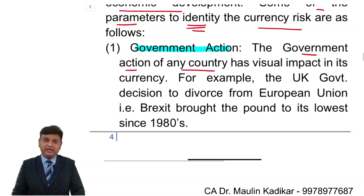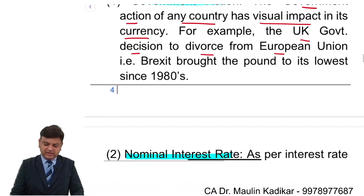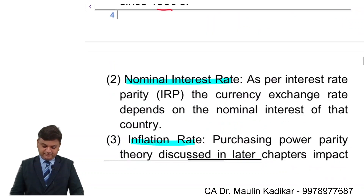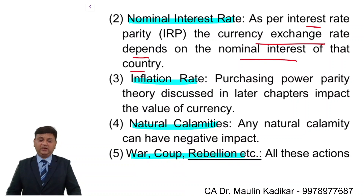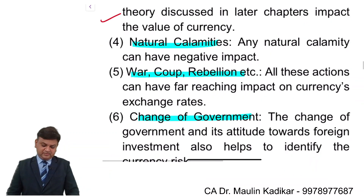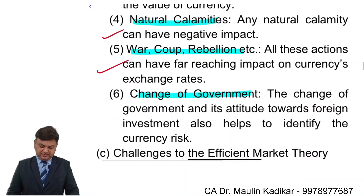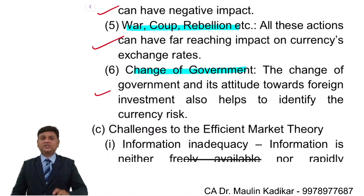The government action of any country has a visible impact on its currency. For example, the UK government's decision to leave the EU — Brexit — brought the pound to its lowest since the 1980s. As per interest rate parity, a currency's exchange rate depends upon the nominal interest rate of the country, so with an increase in the rate of interest, the value of that currency will fall. The same is the case with inflation rate. Natural calamity in a country will cause its currency value to drop. War has the same effect, and frequent change in central government leads to inconsistent policies, which is also adverse.